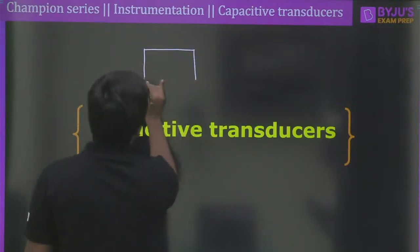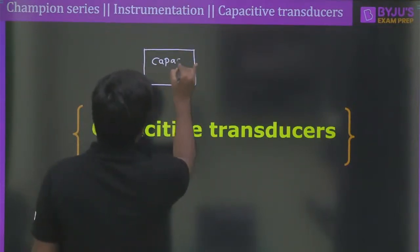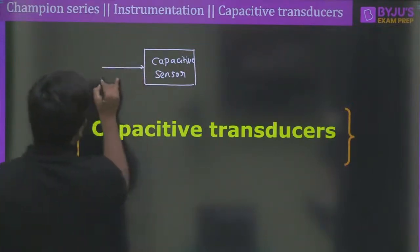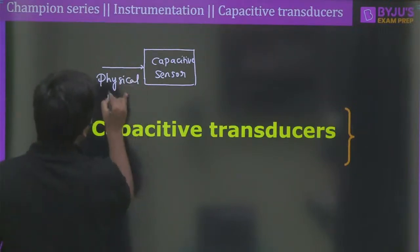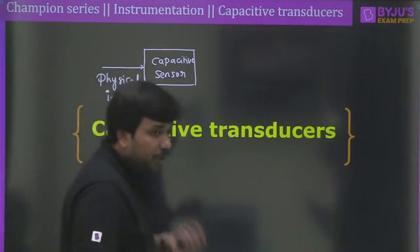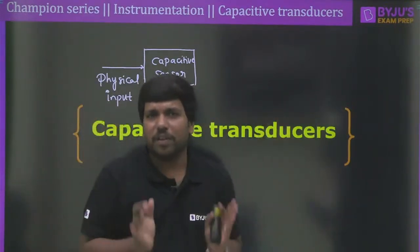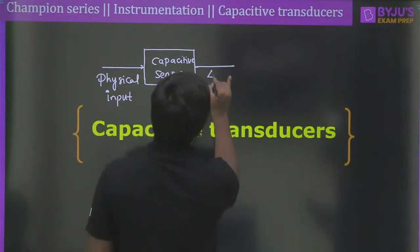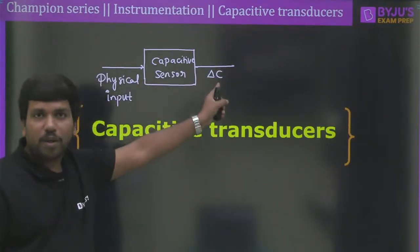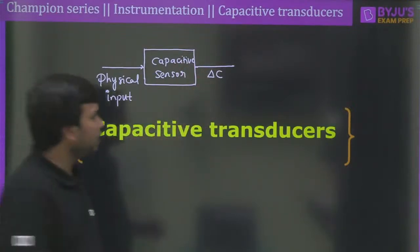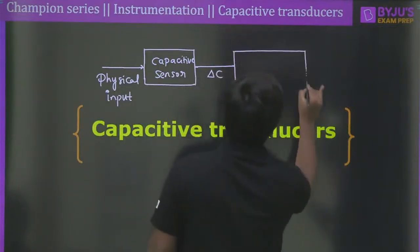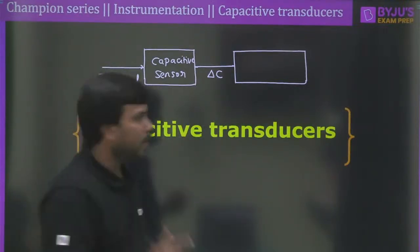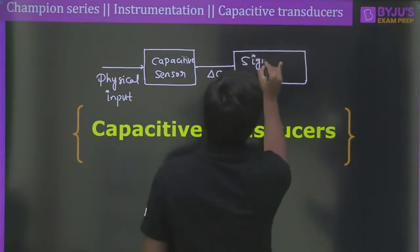A capacitive sensor is a very simple device. Whenever we apply any physical input — which can be displacement, force, humidity, torque, or pressure — the capacitive sensor converts this into a change in capacitance. Once you get the change in capacitance, we require a signal conditioning circuit such as a Wheatstone bridge, AC bridge, oscillator, or RC circuit, and ultimately you get an electrical output — most often voltage, sometimes current, or frequency.